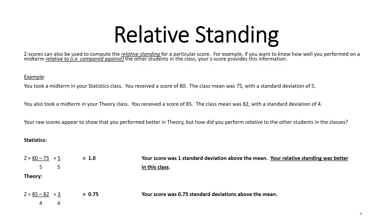Let's take an example. You took two midterms this semester: one for statistics and one for theory. In statistics, you received a score of 80 with a class mean of 75 and a standard deviation of 5. In theory, you received a score of 85 with a class mean of 82 and a standard deviation of 4. Looking at just raw scores, in statistics you scored 80 and in theory 85 — it appears you did better in theory, since 85 is definitely better than 80.